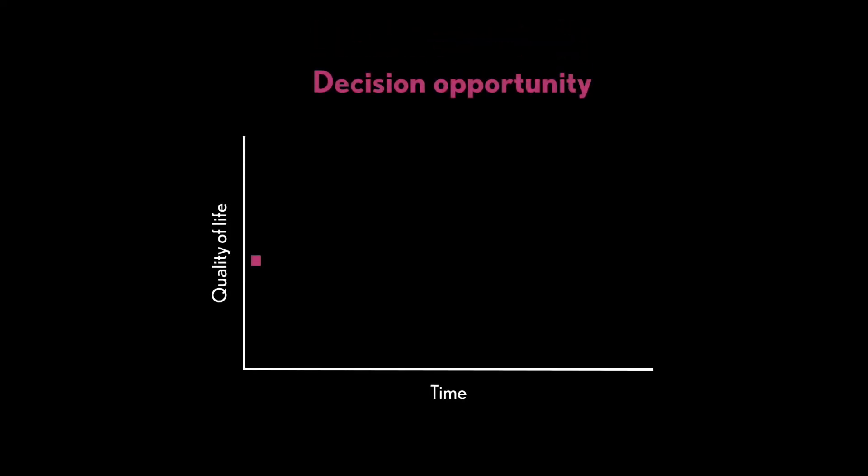Decision opportunities are different. Your life is going along with no problem occurring, but you think of something that would really be great. It doesn't have to be selfish — it would be great for you, your family, others, your country. You'd like it to happen, so you create a decision and alternatives that will help make it happen. That's the decision opportunity, and that's how you improve your quality of life from where it is today.